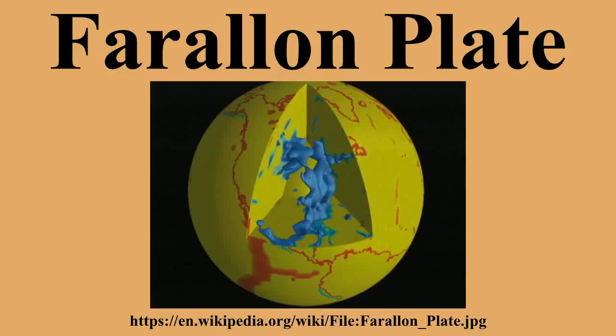When the plates converged, the dense oceanic plate sank into the mantle to form a slab below the lighter continent. It is generally accepted that the western quarter of North America consists of accreted terranes accumulated over the past 200 million years as a result of the oceanic Farallon Plate moving terranes onto the continental margin as it subducted. However, this simple model was unable to explain many terrain complexities, and is inconsistent with seismic tomographic images of subducting slabs penetrating the lower mantle.